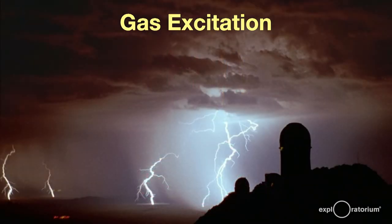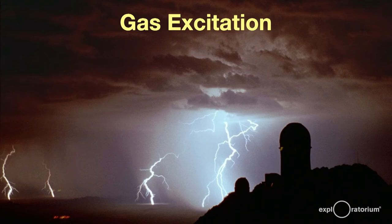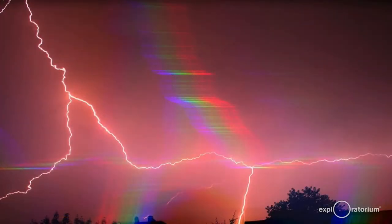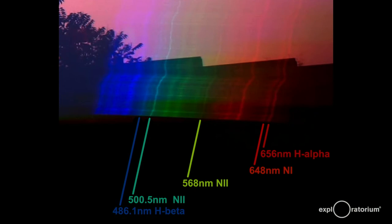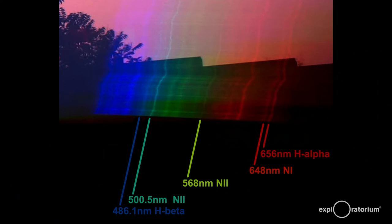Like my gas discharge tubes, lightning produces gas excitation. This photo is from Kitt Peak Observatory near Tucson, Arizona. If you take a photo of lightning with your diffraction-grading glasses over the lens, you'll get the spectrum of the gases in the lightning stroke. Let's magnify in on this portion. Here, you see the colors produced by gases in the atmosphere. You see nitrogen, which is close to 80% of our air, and hydrogen.